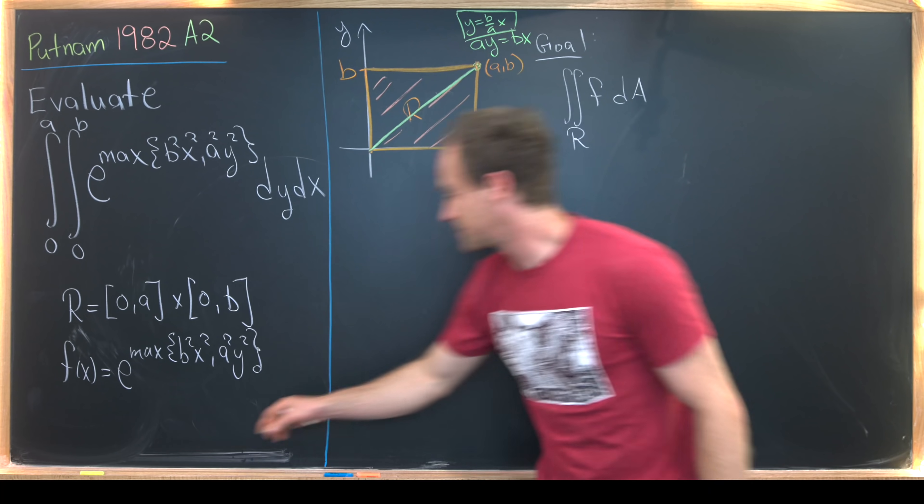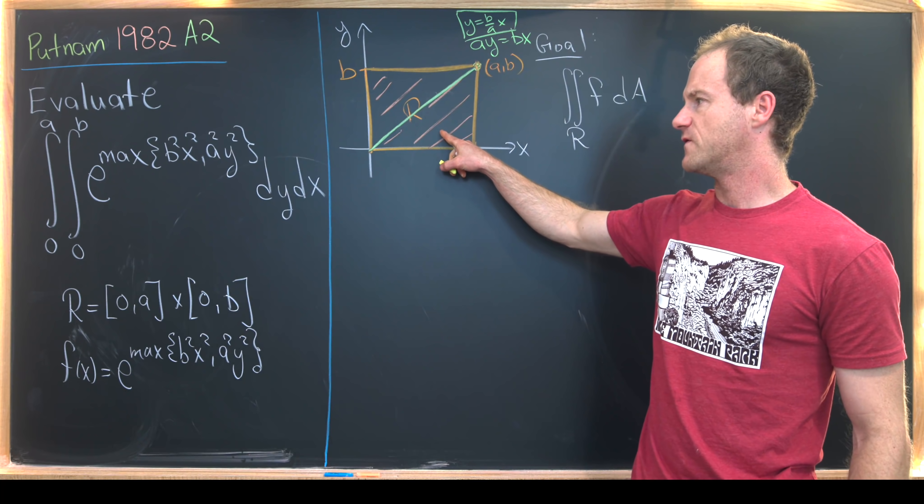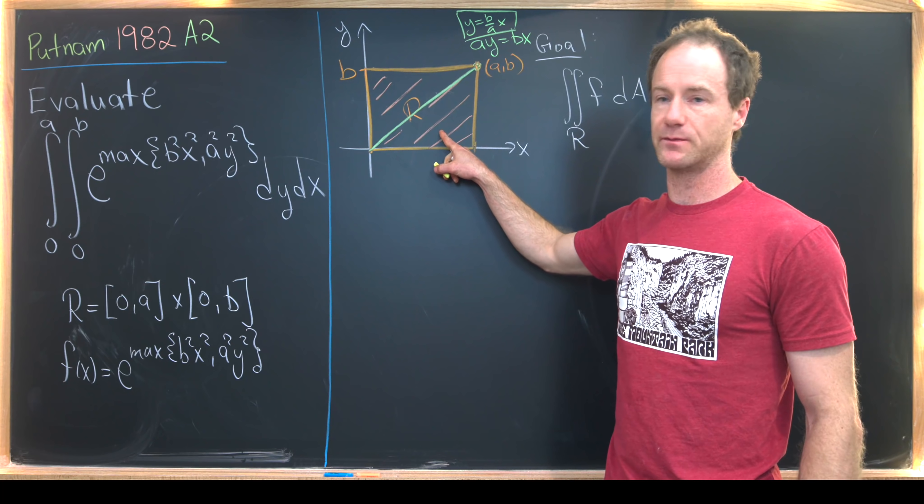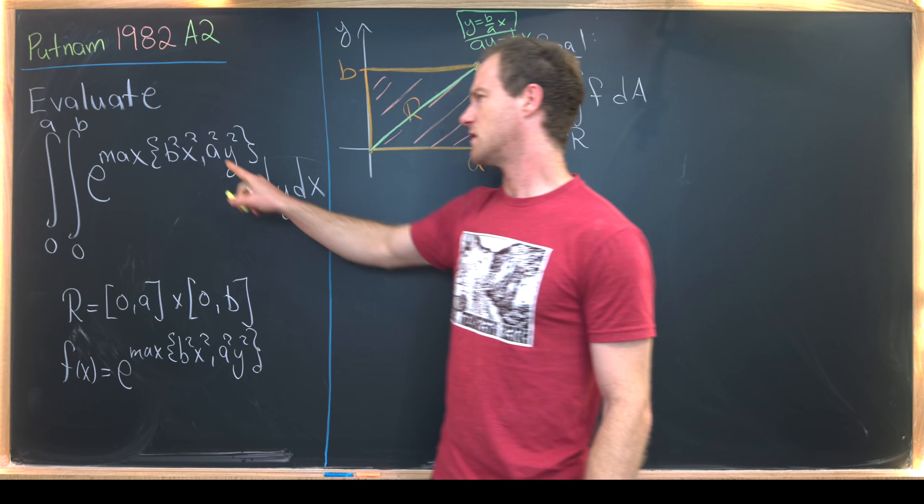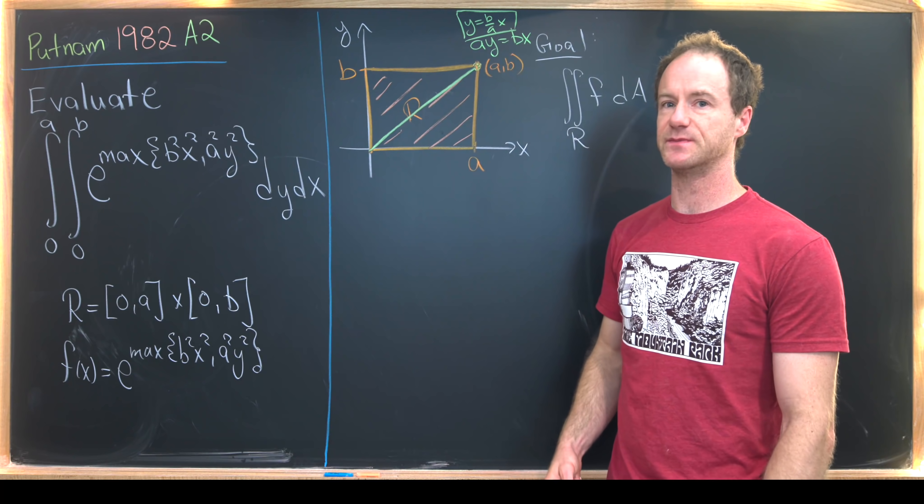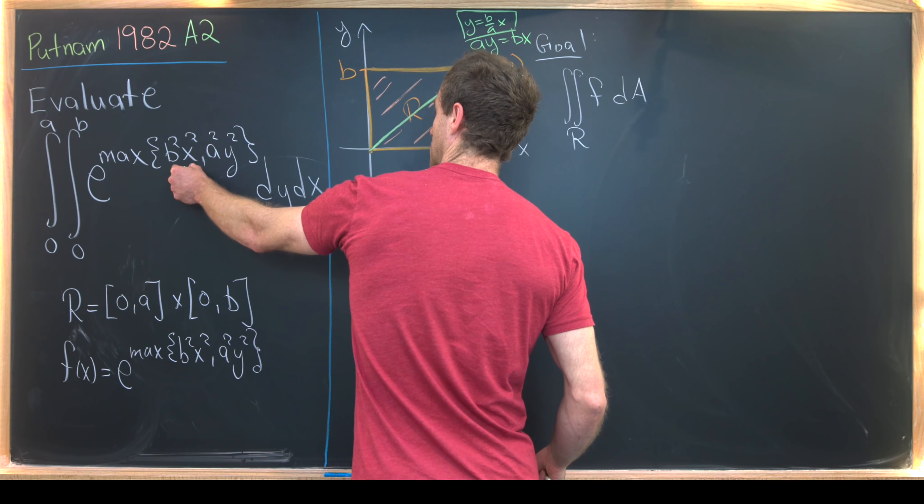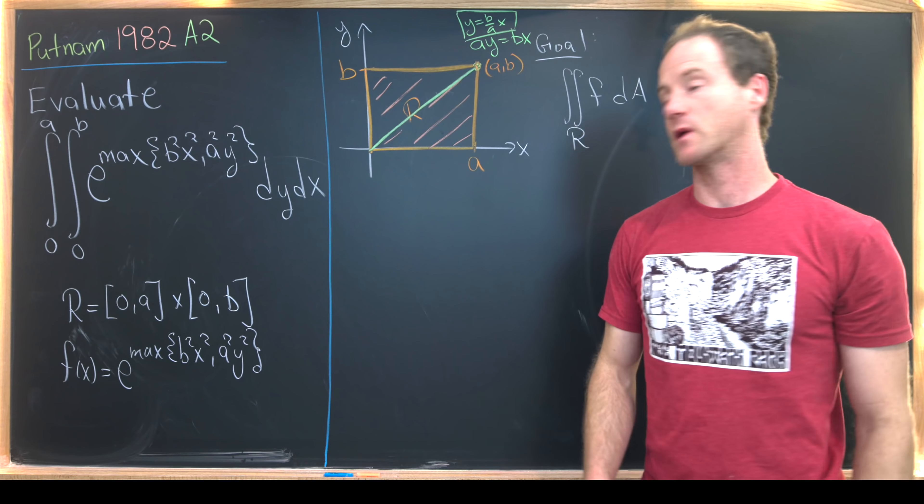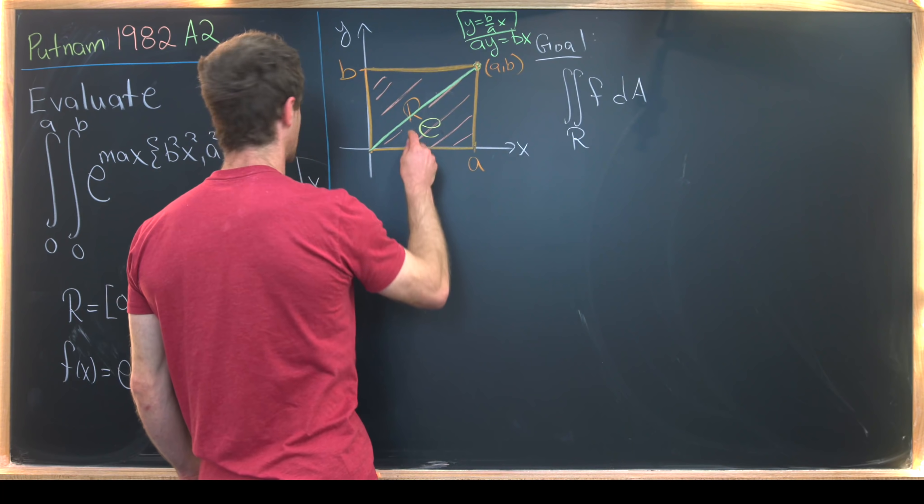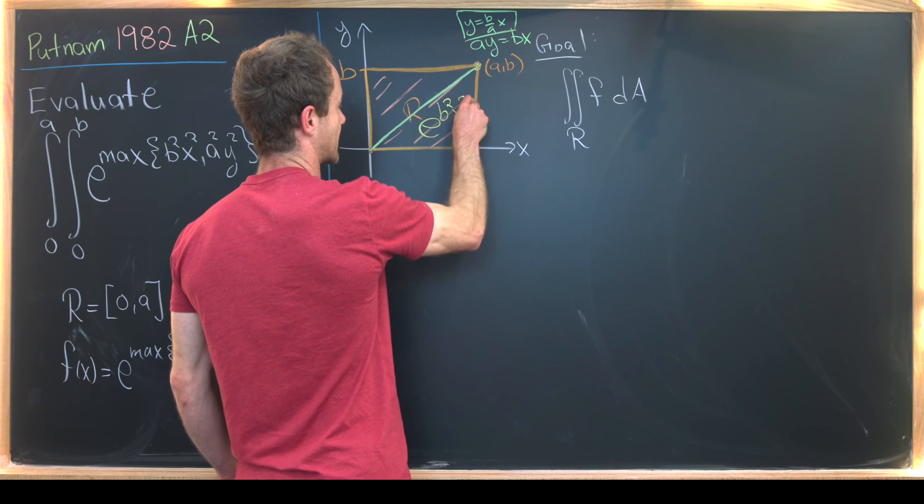Now next, let's notice that down here, all of the x values are bigger than the y values. But this scaling is also going to keep those things bigger. So here, the maximum of b squared x squared and a squared y squared is b squared x squared. So down here, our function looks like e to the b squared x squared.